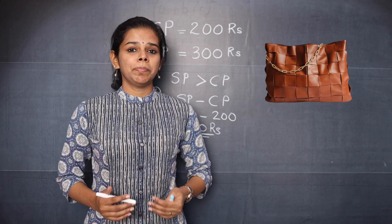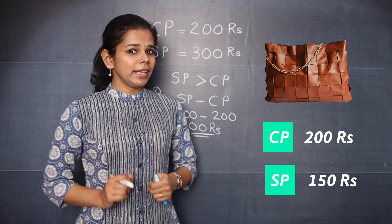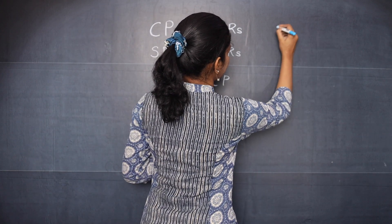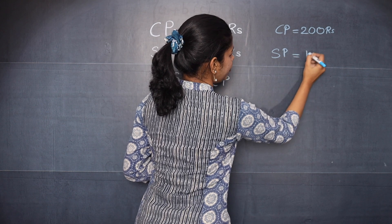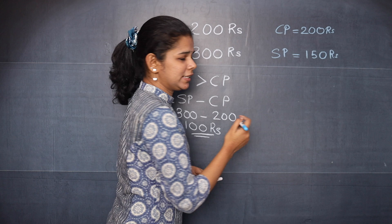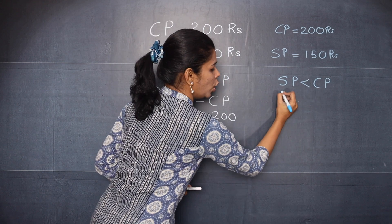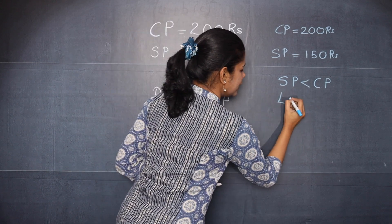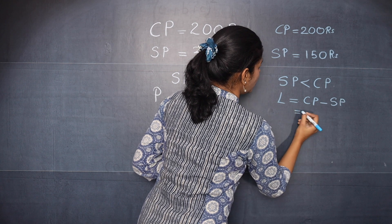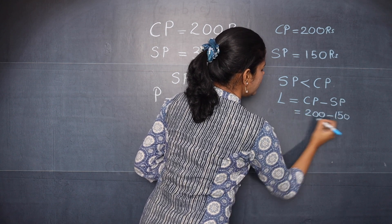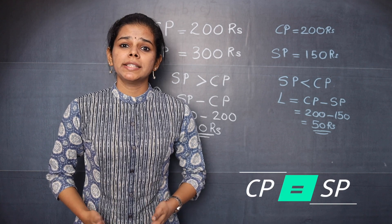Suppose you have another item — a bag — and the cost price of this bag was 200 rupees and you are going to sell it for 150 rupees. So here CP is 200 rupees and the selling price is 150 rupees. CP is greater, meaning SP is less than CP, so in this case a loss is made. Loss L is equal to CP minus SP — here that is 200 minus 150, which is 50 rupees.